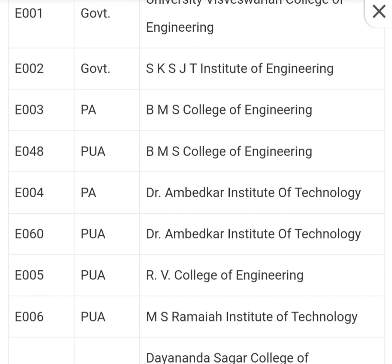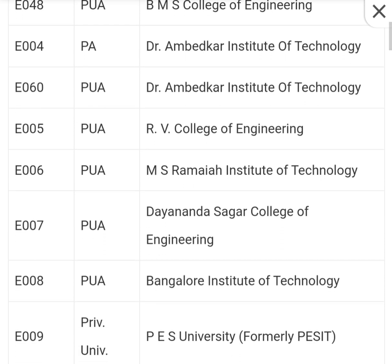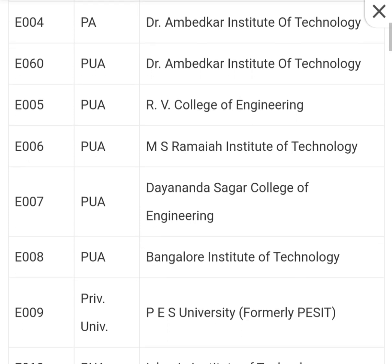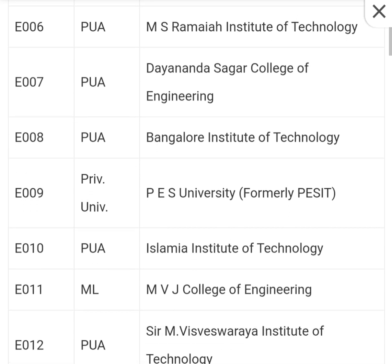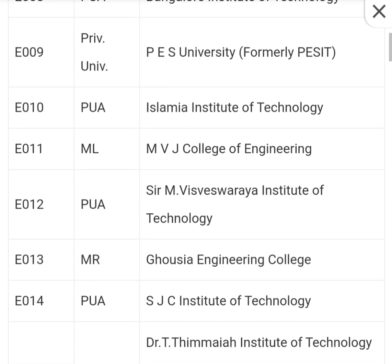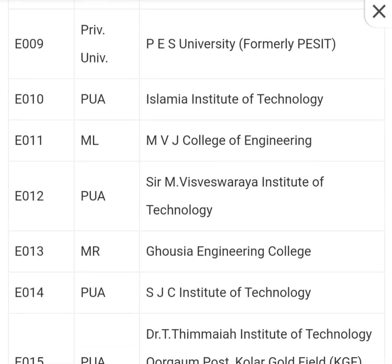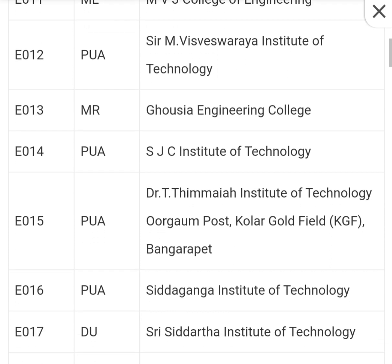GOVT means government college. PA means private aided college. PUA means private unaided college. Private university is nothing but private university. ML is minority and linguistic college — like you can see in front of MVJ College of Engineering. PUA means private unaided. MR means minority religious college.